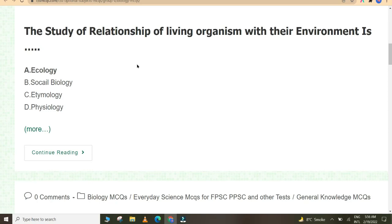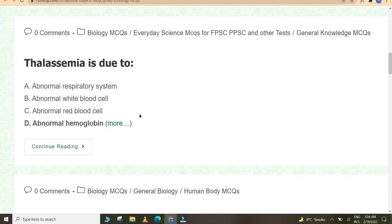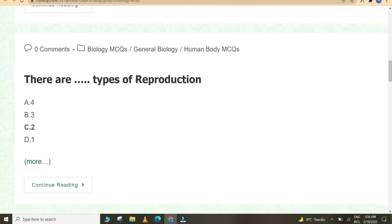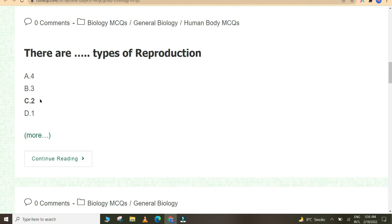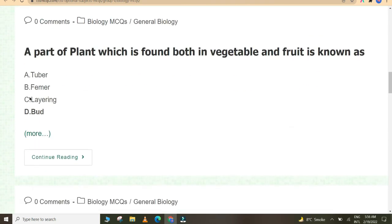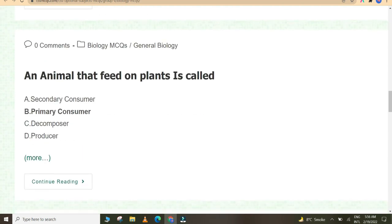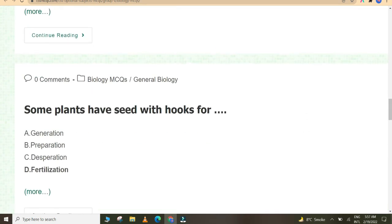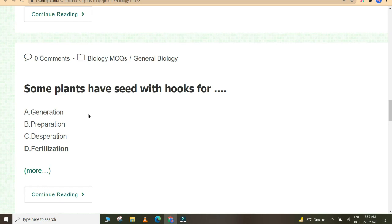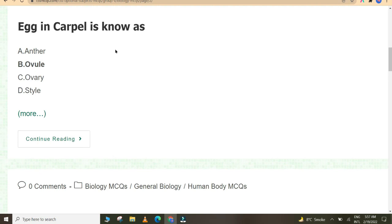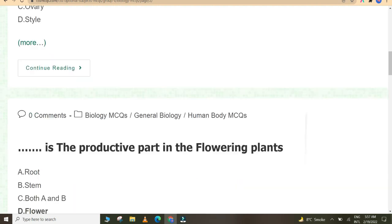The study of relationship of living organisms with their environment is ecology. Thalassemia is due to abnormal hemoglobin. There are two types of reproduction. A part of plant which is found both in vegetable and fruit is known as ovary. The living place of an organism is called habitat. An animal that feeds on plants is called primary consumer.